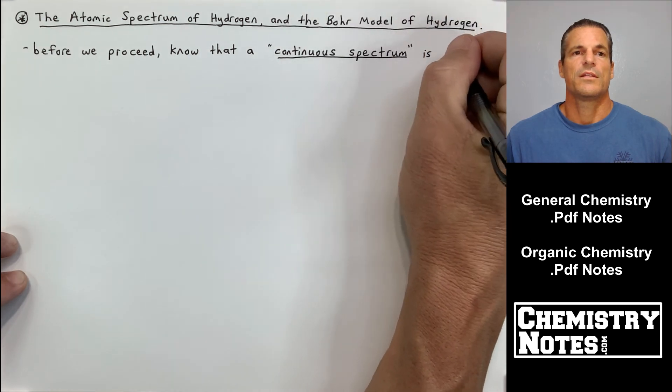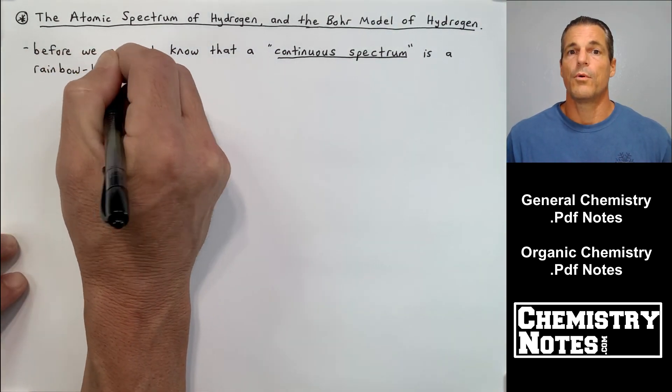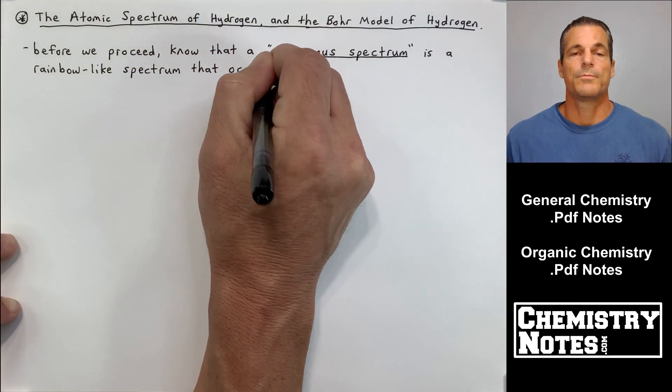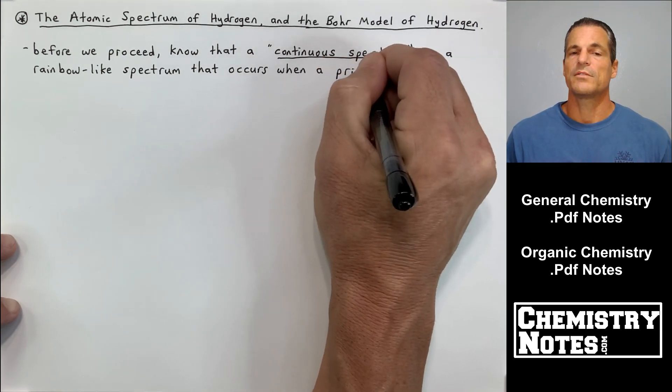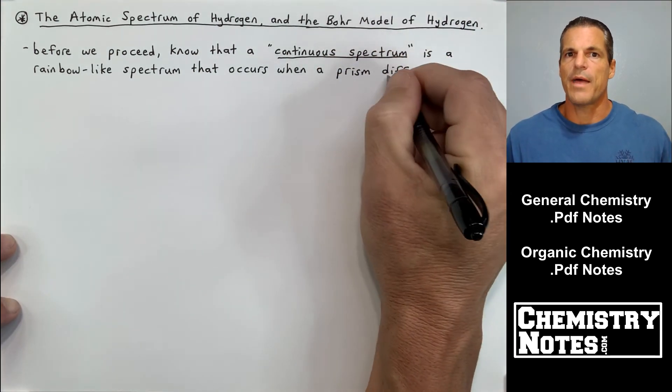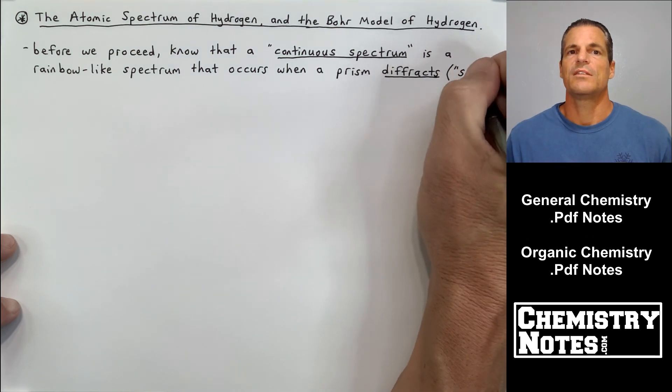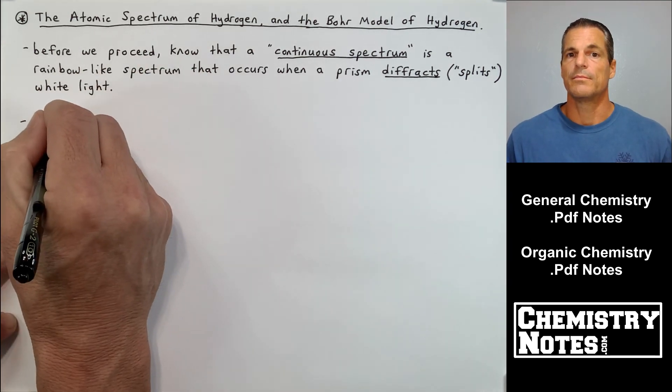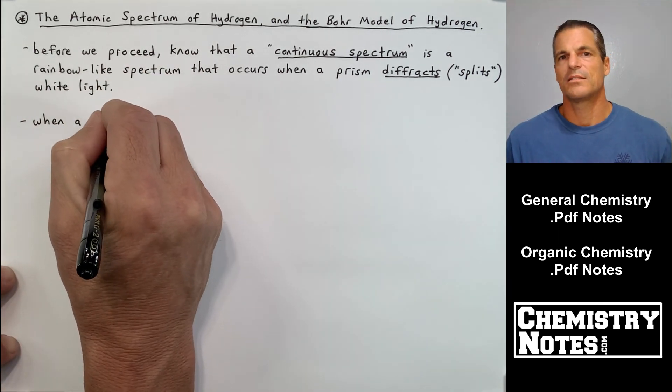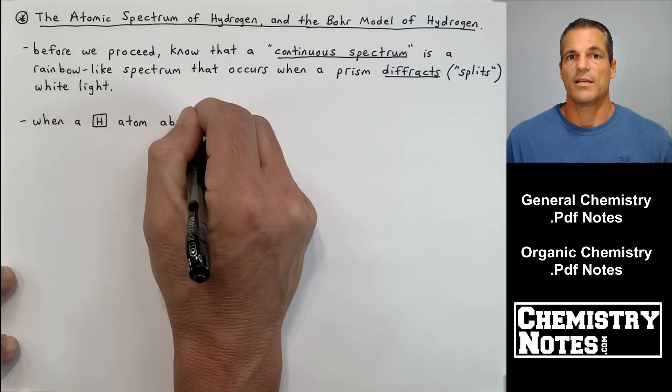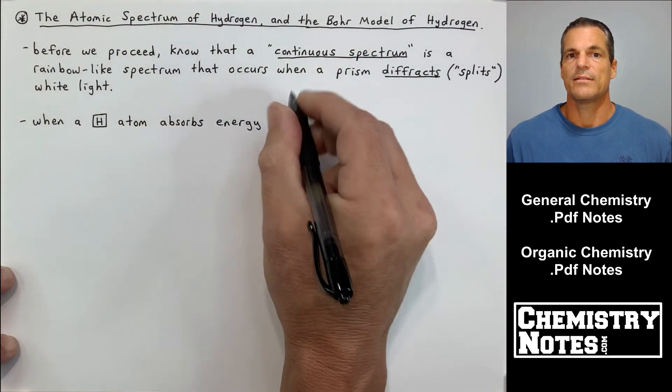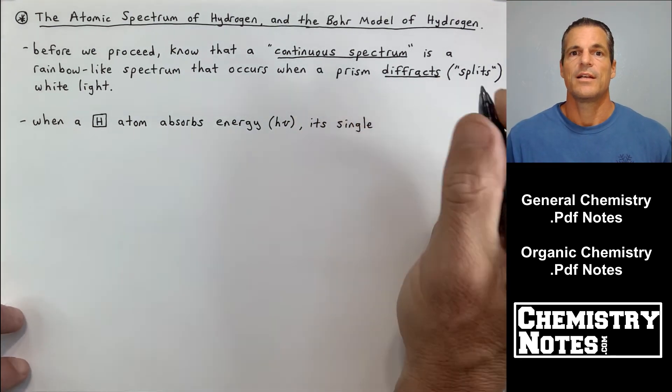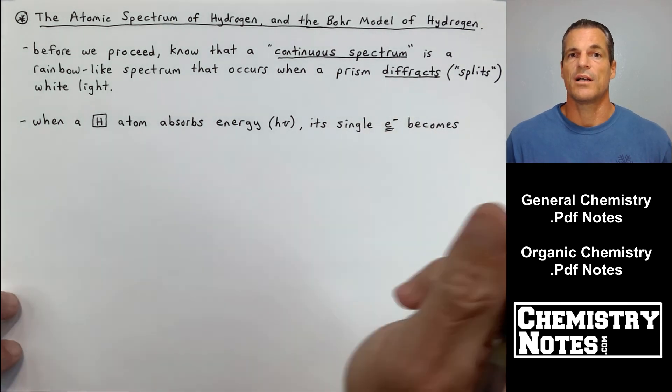The atomic spectrum of hydrogen and the Bohr model of hydrogen. Before we proceed, know that a continuous spectrum is a rainbow-like spectrum that occurs when a prism diffracts or splits white light. One example of this is a rainbow. The white light is split by the water droplets which are like prisms and they diffract or split white light into its various colors.